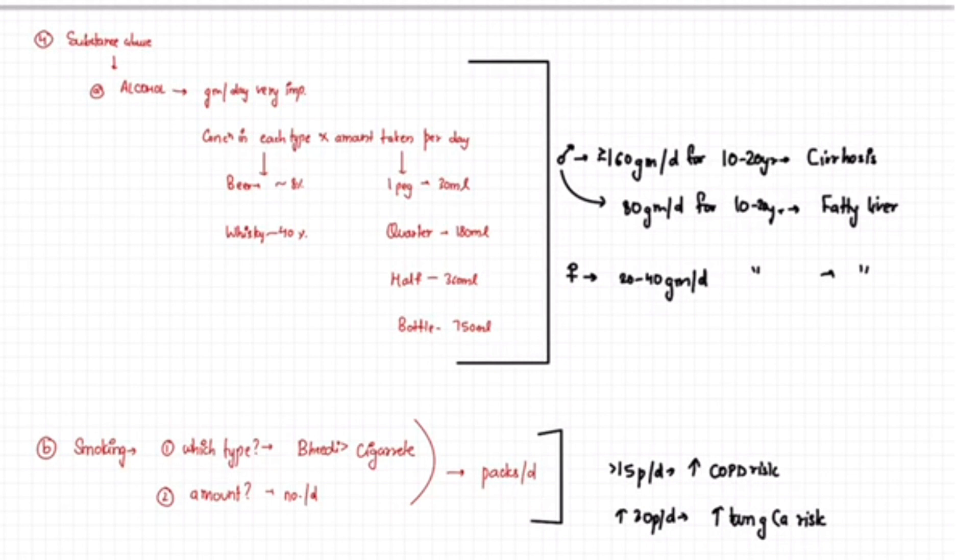How you calculate is you should know about the concentration in different types of alcohol, like what is the concentration in beer, whiskey, and then you multiply it with amount taken per day. For which you should know what is the amount in one pack, one quarter, one half, or a bottle.